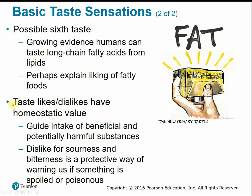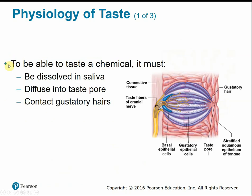Our taste likes and dislikes have a homeostatic value — they help guide the intake of beneficial or potentially harmful substances. Our dislike for sourness or bitterness is protective, warning us if something would be spoiled or poisonous. In order to taste a chemical, it must first dissolve in saliva, then diffuse into the taste pore and contact the gustatory hairs to send signals through taste neurons.